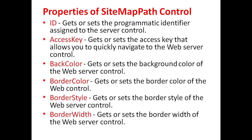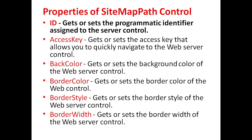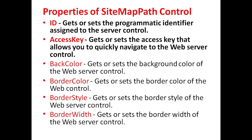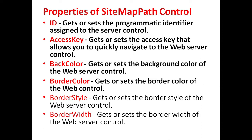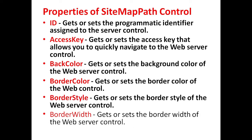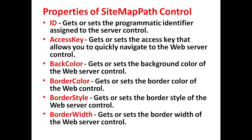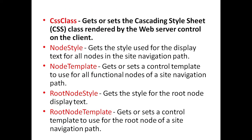Different properties of SiteMapPath controls include: ID, which is used to get or set the programmatic identifier assigned to the server control. AccessKey is used to get or set the access key that allows the user to quickly navigate to the web server control. BackColor property is used to get or set the background color of the web server control. BorderColor property is used to get or set the border color of the web control. BorderStyle property is used to get or set the border style of the web server control. BorderWidth property is used to get or set the border width of the web server control. CssClass property is used to get or set the cascading stylesheet class rendered by the web server control.